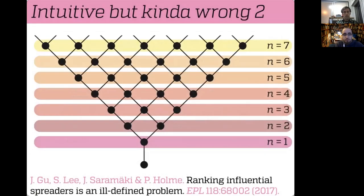Technically speaking, you cannot rank the nodes in order of importance. If importance means reducing the size of the largest connected component as much as possible and you delete only one node, that gives n equal one. If you delete two nodes, that's n equal two, and so on. If you want to delete five nodes, you won't delete any of the ones you'd delete if deleting four nodes. As the paper title says, ranking influential spreaders is an ill-defined problem.